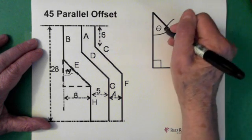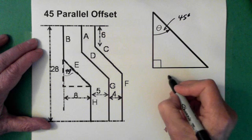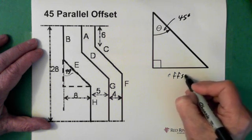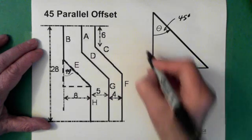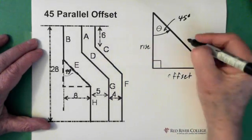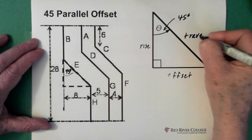Here's our offset angle, which is the 45 degrees. This side here is the offset. This here is our rise, or our advance. And this piece is the travel.